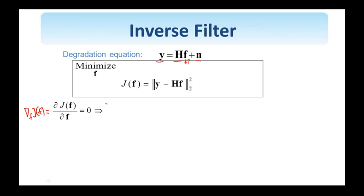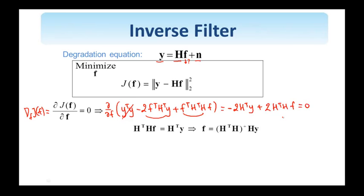The norm can be expanded as follows. This term is independent of f, it can go away, and the gradient of this term is minus 2 h transpose y, while the gradient of the quadratic term is 2 h transpose hf. This should be equal to 0, and therefore we obtain the so-called normal equations.